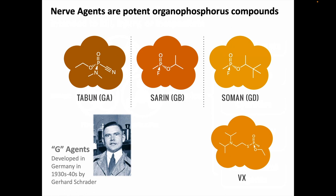Starting off with the nerve agents. Nerve agents are potent organophosphorus compounds, which we've covered in our section about insecticides. In fact, the first nerve agents were developed by the German scientist Gerhard Schrader while working on insecticides in the 1930s, and he got funding through the German government since his discovery had significant potential military impact. Before the end of World War II, Schrader's team had developed three nerve agents that they called Tabun, Sarin, and Soman.